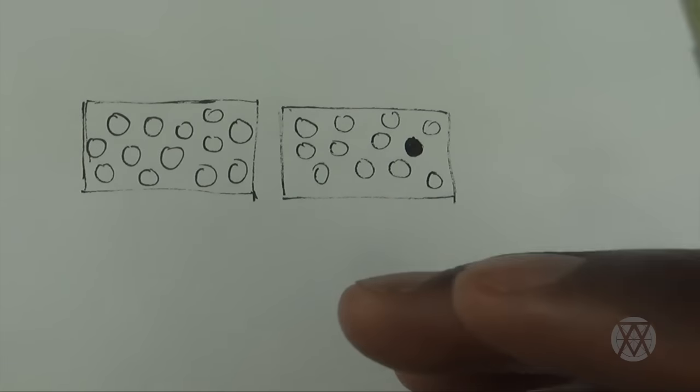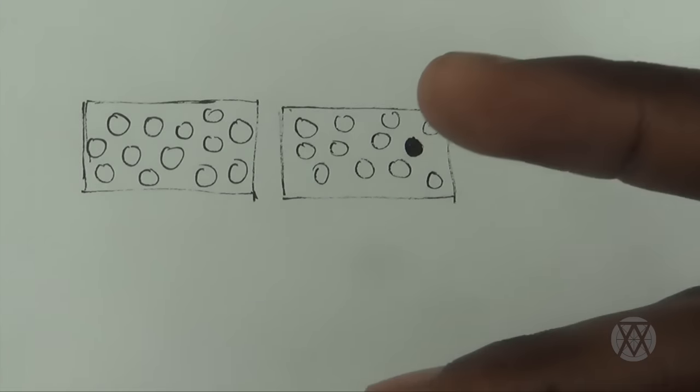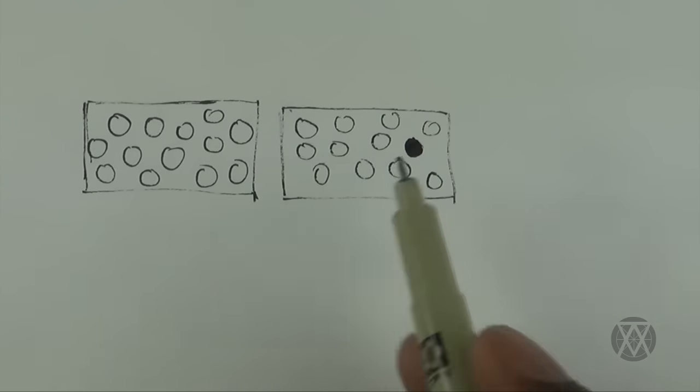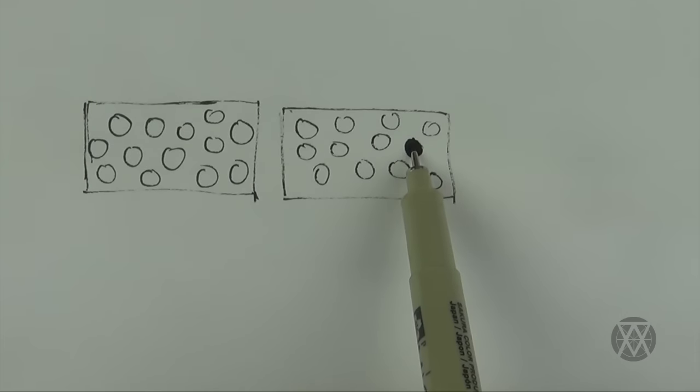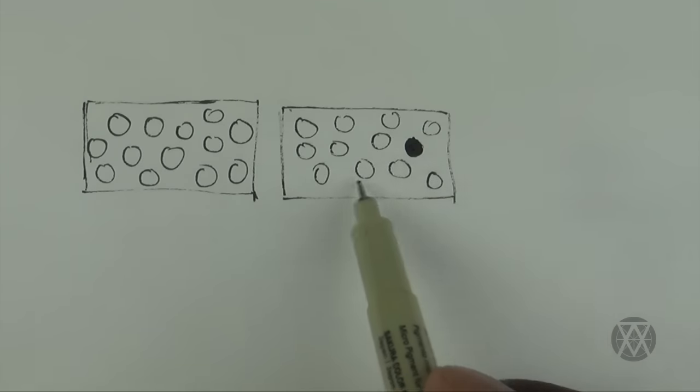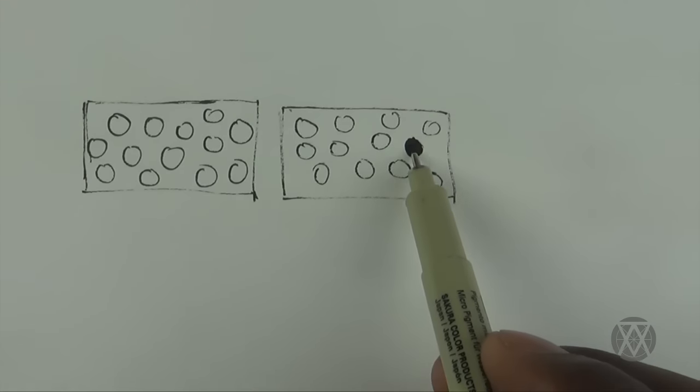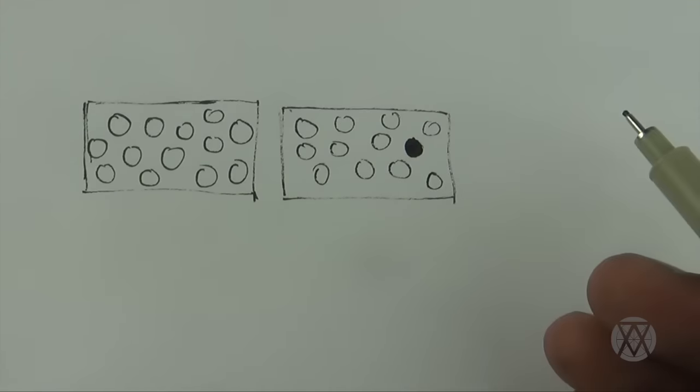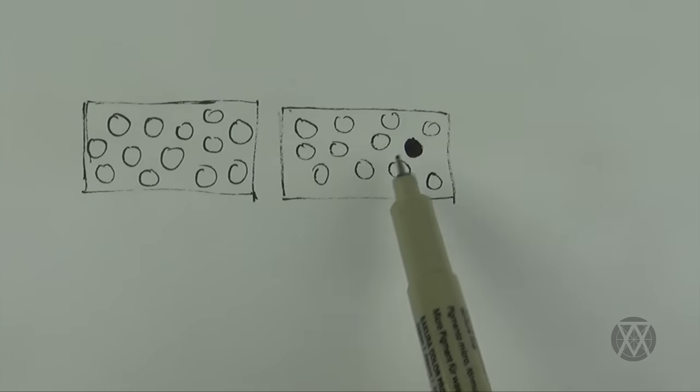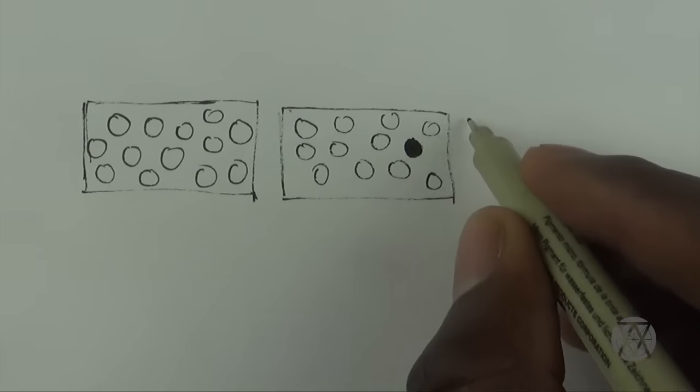It's just the way it is because we're drawn to contrast, we're drawn to things that stand out. This is one of the ways of creating emphasis - to use value. The same would work if we inverted this whole idea where all the circles were black and this were white.